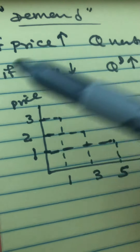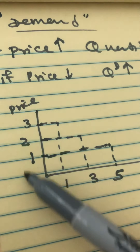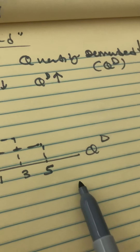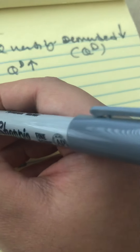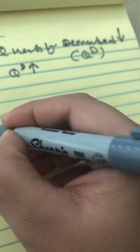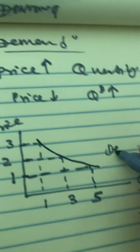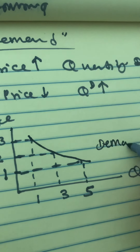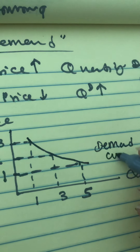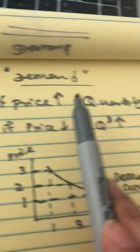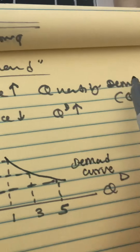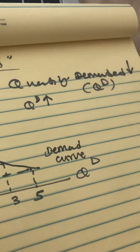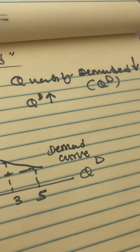So as price is dropping, quantity demanded is increasing. If you connect all these points, you get a downward-sloping demand curve, which again shows the law of demand — the inverse relationship between price and quantity demanded.